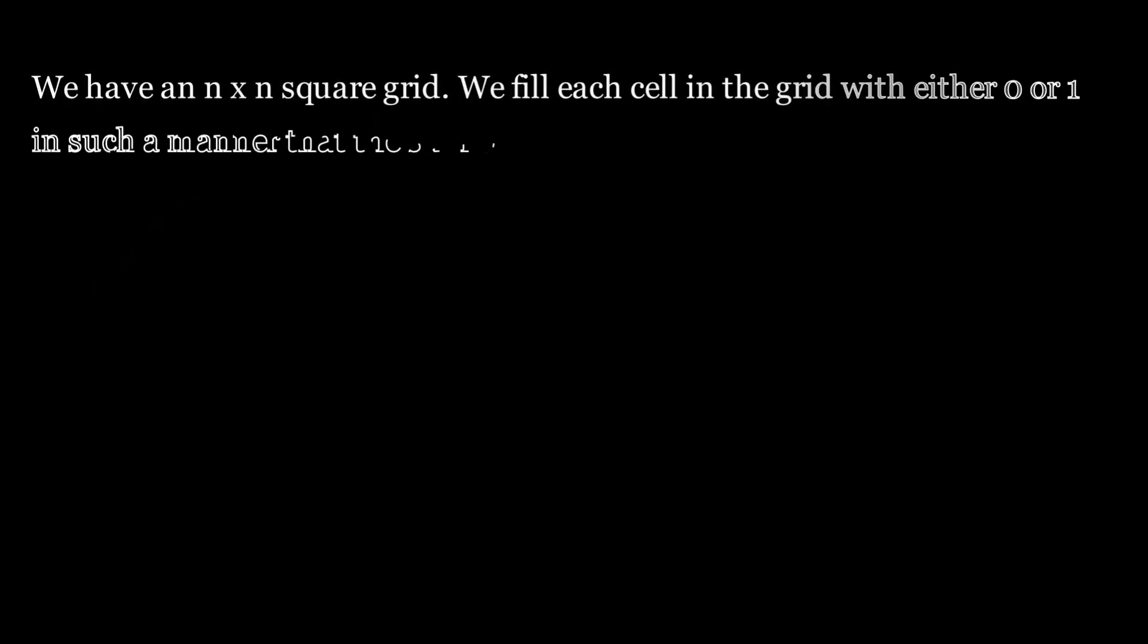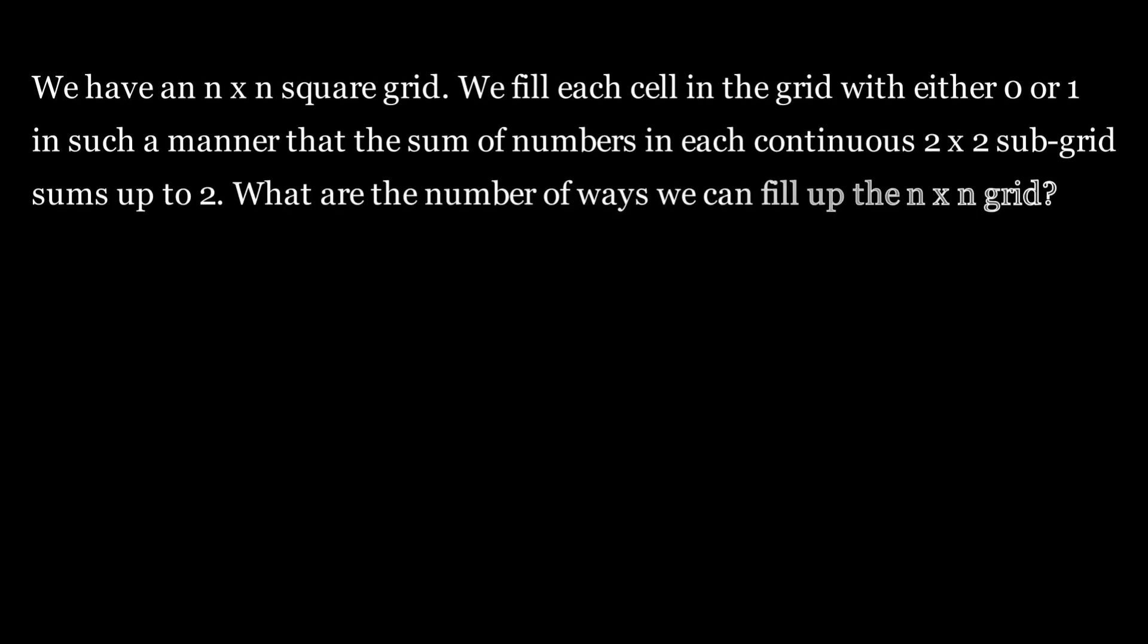We have an n cross n square grid. We fill each cell in the grid with either 0 or 1 in such a manner that the sum of numbers in each continuous 2 cross 2 subgrid sums up to 2. What is the number of ways we can fill up the n cross n grid?